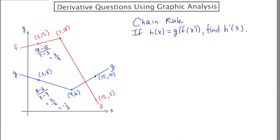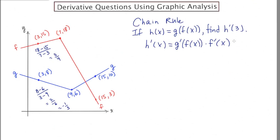In the third example, we're going to use the chain rule. H of x is defined to be g of f of x — a composition of functions. When finding the derivative using the chain rule, start by taking the derivative of the outer function, which is g, and then multiply by the derivative of the inner function, which is f. Rewriting specifically at h prime of three by replacing every x with three, we get g prime of f of three times f prime of three.